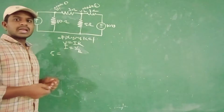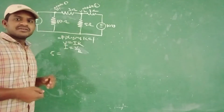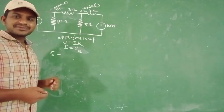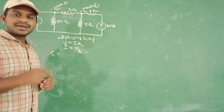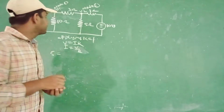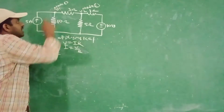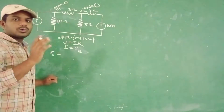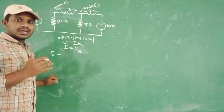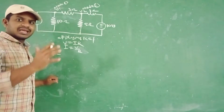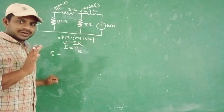First of all, whenever the circuit diagram is given like this, we are going to indicate the node points. That is the first thing. In the previous session, we already clearly explained how to indicate the node points from the given circuit diagram.